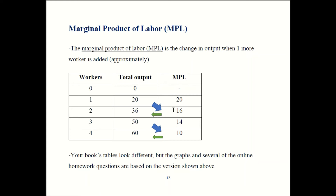When the firm adds a third worker, all three together produce a total of 50 units. Before, with just two workers, output was 36 — so the contribution of the third worker is an increase of 14, giving MPL of 14. If you hire a fourth worker, total output goes up to 60. That's an increase of 10 from 50. Just follow the arrows in the table and that's how you find MPL. Your book puts the MPL in between the numbers of workers — it's constructed the same way, just formatted differently.